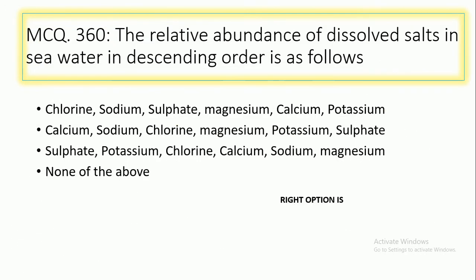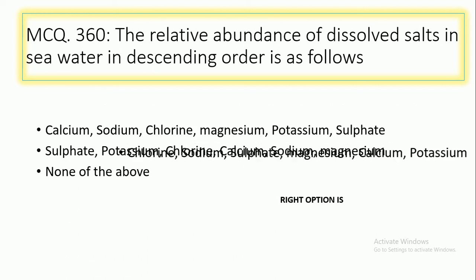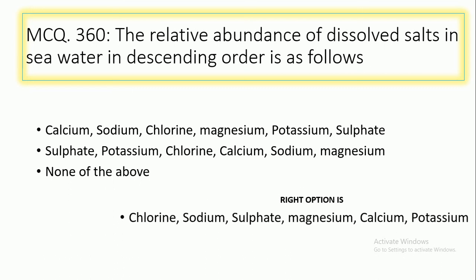MCQ number 360: The relative abundance of dissolved salts in seawater in descending order. Options include: chlorine, sodium, sulfate, magnesium, calcium, potassium; or calcium, chlorine, magnesium, potassium; or sodium, chlorine, magnesium, potassium, sulfate; or none of the above. The right option is option number 1: chlorine, sodium, sulfate, magnesium, calcium, potassium.